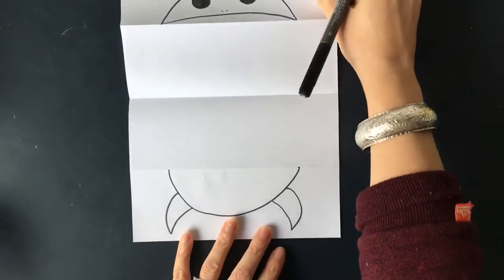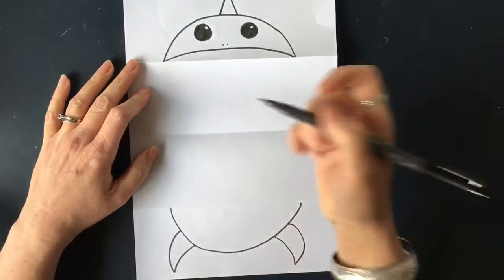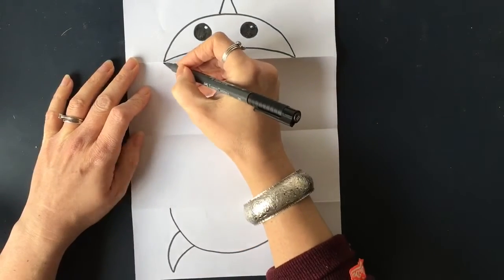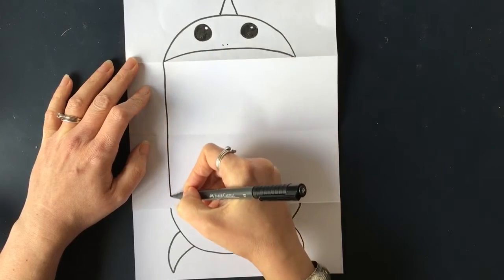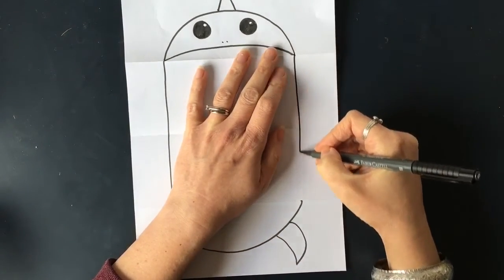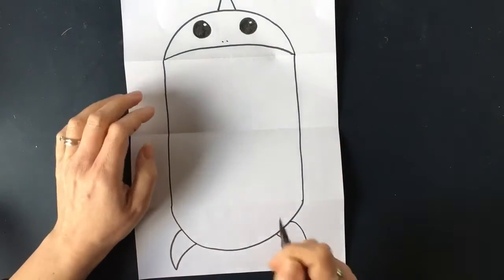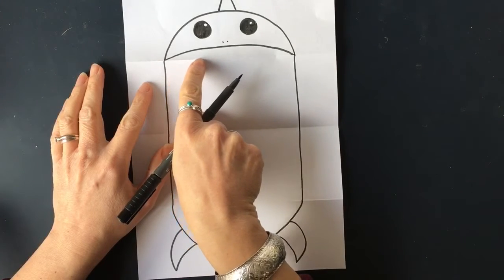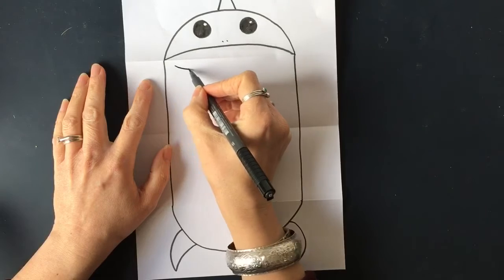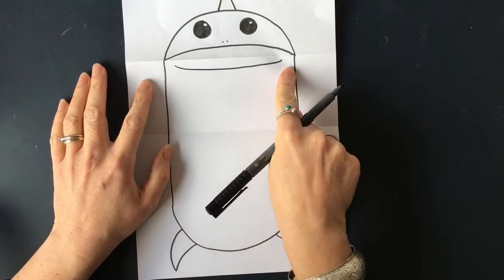Now we're going to open it. So we need to join up this point here to this point here. Don't worry if your line is a little bit wobbly, it's not going to matter. And the top to the bottom here as well. Now we need to draw a mouth. Be careful because we want to make sure it's underneath this fold. So I'm going to do a line going across and mine comes down a little bit like that, a bit of a curve.